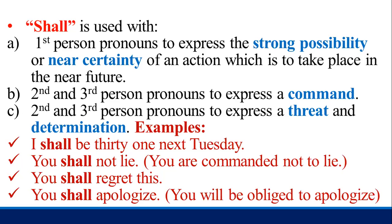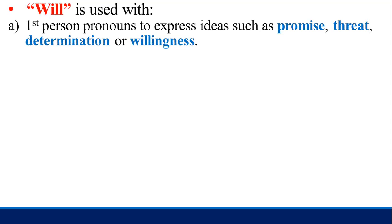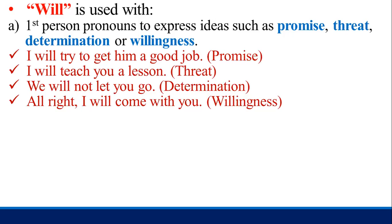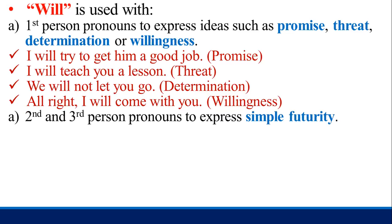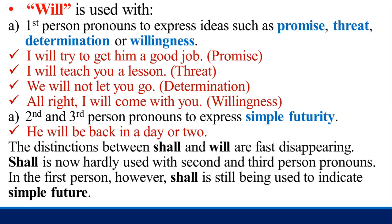Will is used with the first person pronouns to express promise, threat, determination, and willingness: 'I will try to get him a good job' (promise); 'I will teach you a lesson' (threat); 'We will not let you go' (determination); 'I will come with you' (willingness). With second and third person pronouns, will expresses simple futurity: 'He will be back in a day or two.' The distinctions between shall and will are fast disappearing. Shall is now hardly used with second and third person pronouns; in the first person, however, shall is still used to indicate simple future.